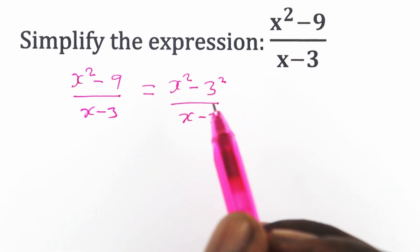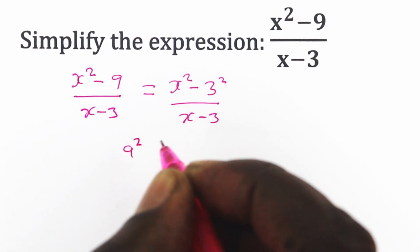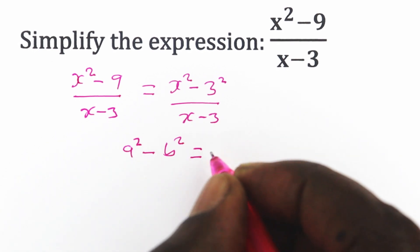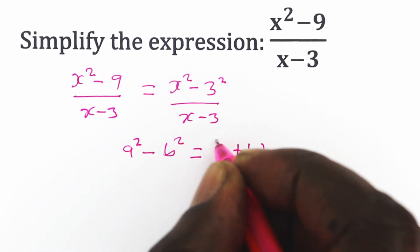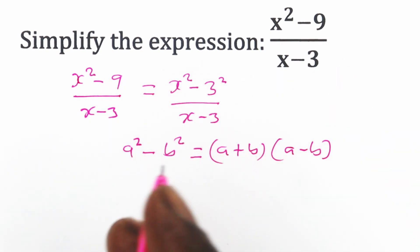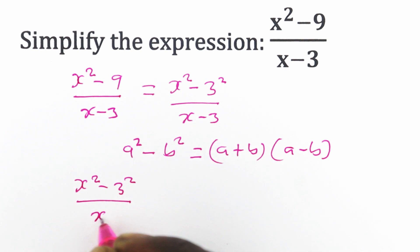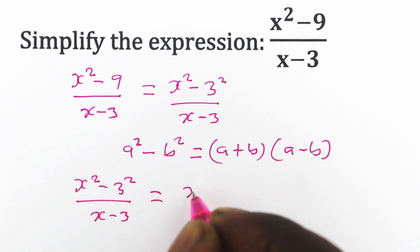If you look at the numerator, you can relate that with one of the quadratic identities. If you have a difference of squares, a squared minus b squared, that is the same as (a plus b)(a minus b). So we can write x squared minus 3 squared over x minus 3 as x